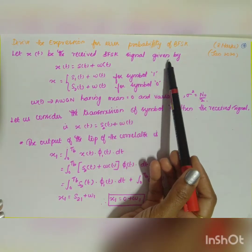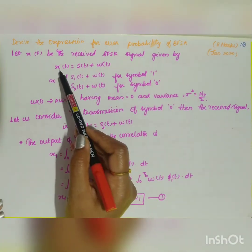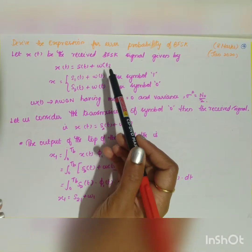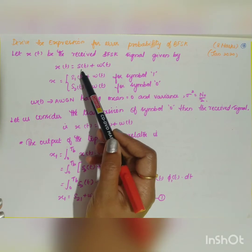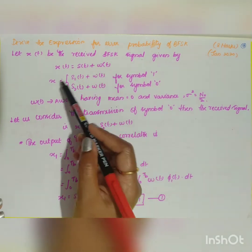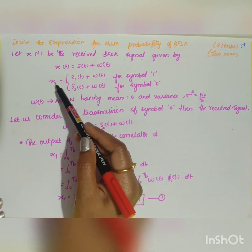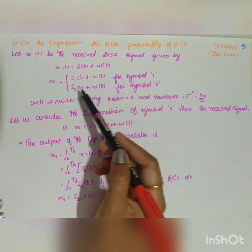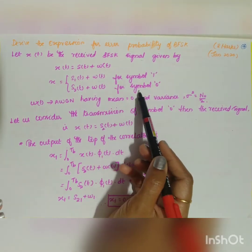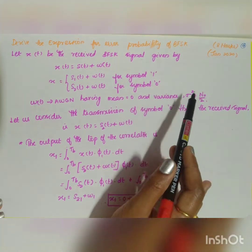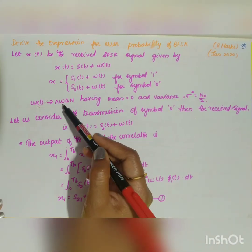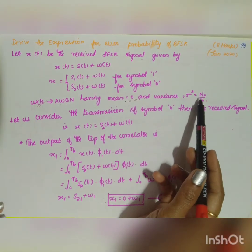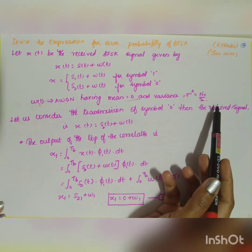Let x(t) be the received BFSK signal, given by the signal plus noise from the channel: x(t) = s(t) + w(t). More specifically, x(t) = s1(t) + w(t) for symbol 1, and x(t) = s2(t) + w(t) for symbol 0, where w(t) is additive white Gaussian noise with mean 0 and variance σ² = N₀/2.